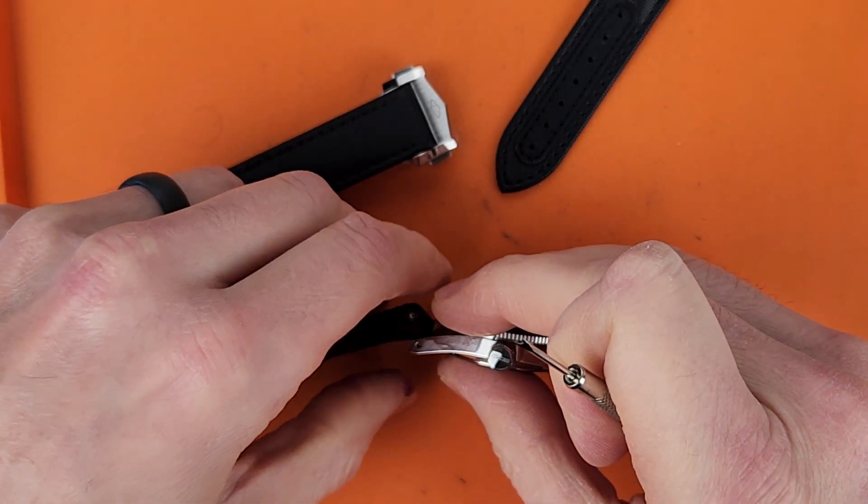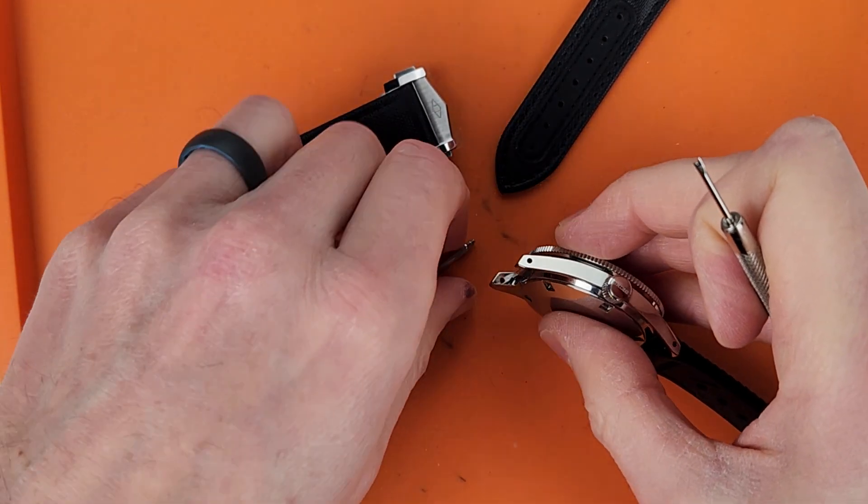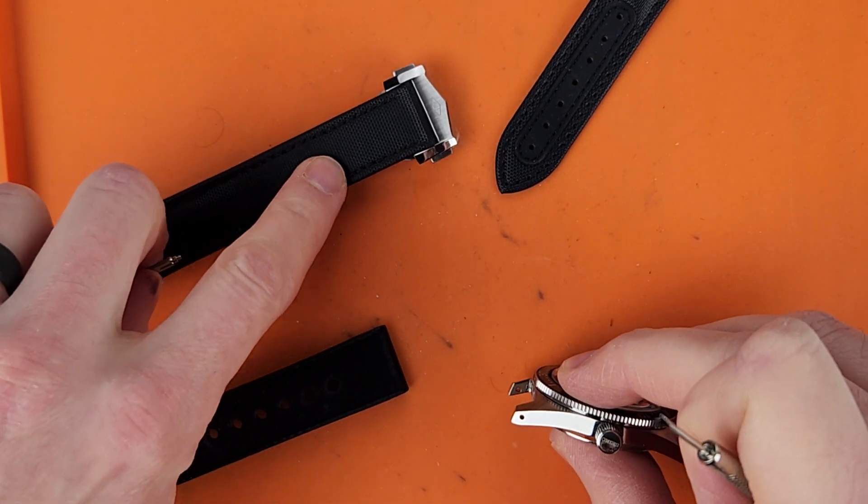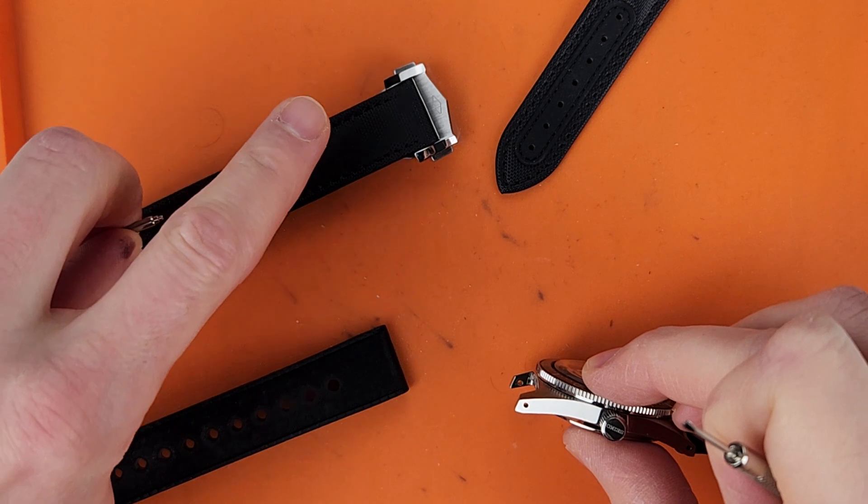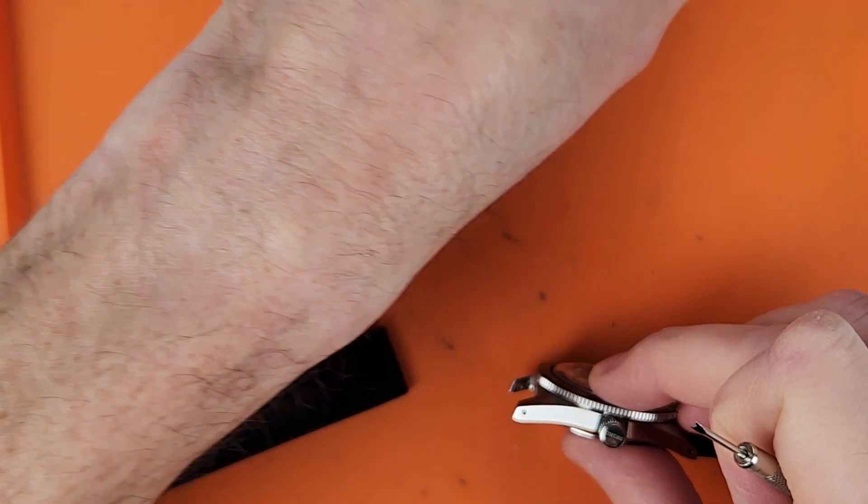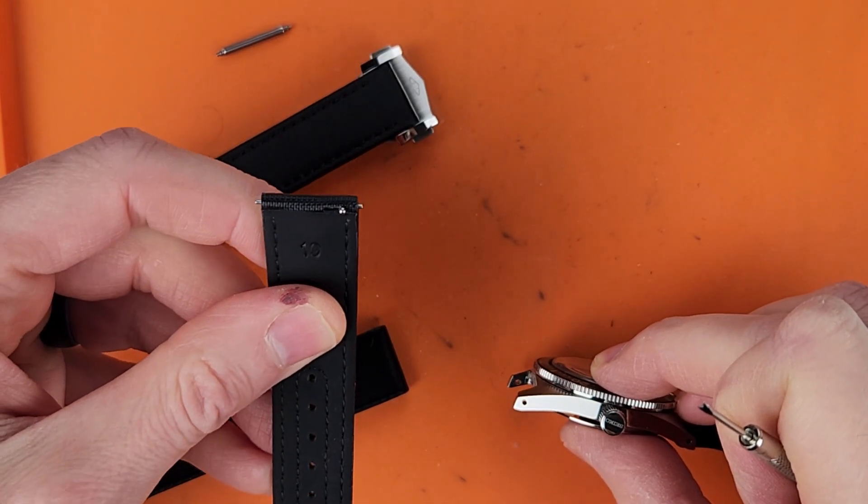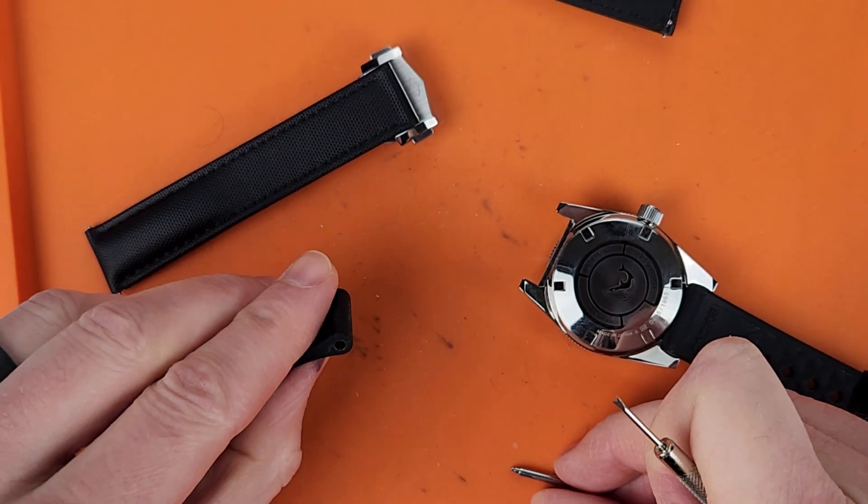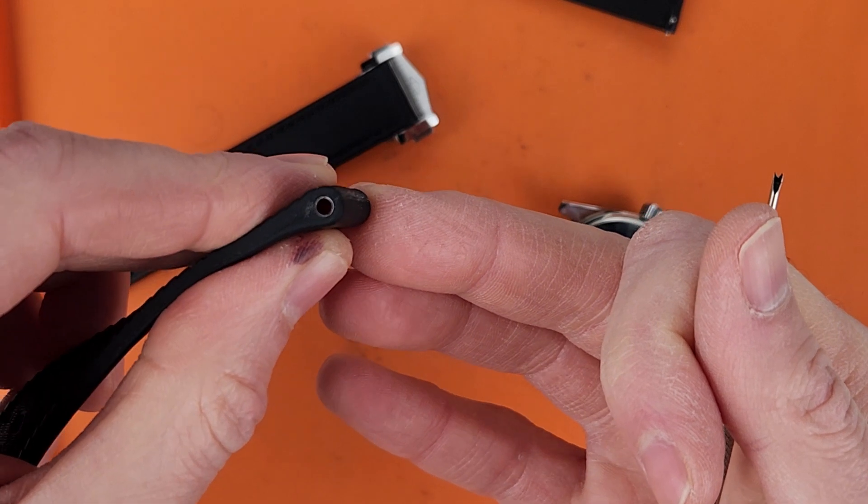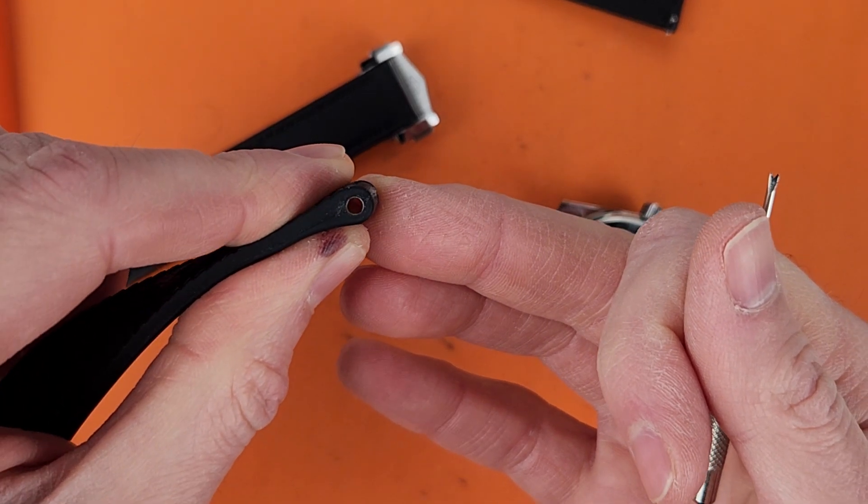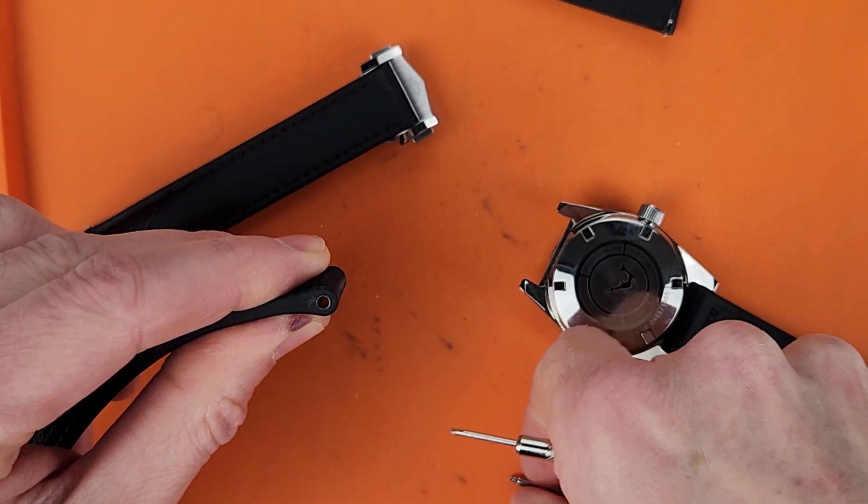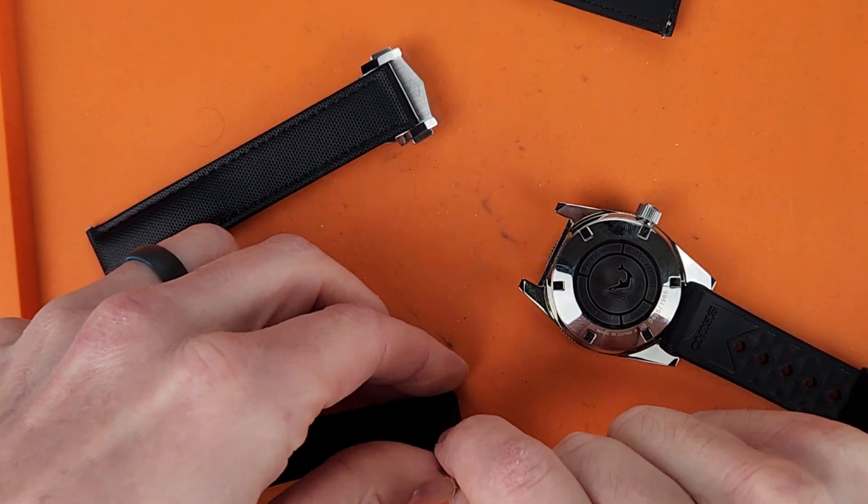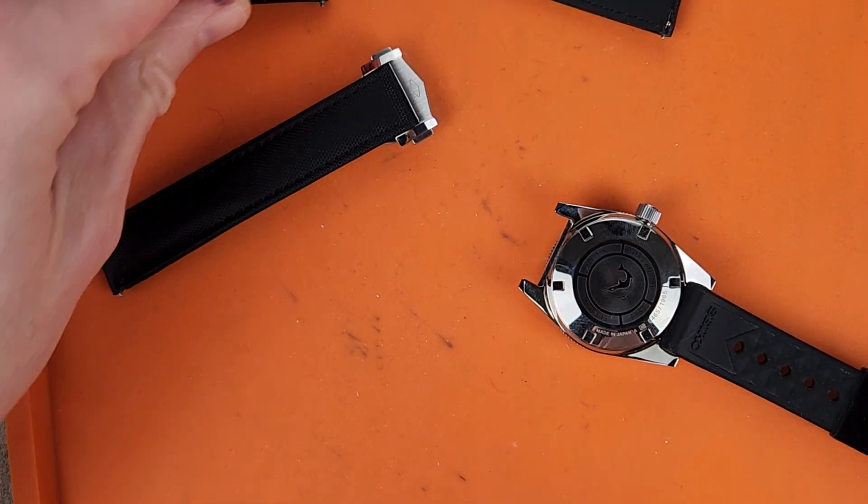The other thing I didn't really think about is this has the fat spring bars. You can order this with the fat spring bar or you can order it with the quick release. I got the quick release just because it's obviously easier to put them on and off. I was curious too, this does have a metal sleeve in there. Most of the newer Seikos have a metal sleeve inside of the silicone straps. I'm not exactly sure why they do that.